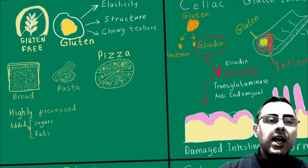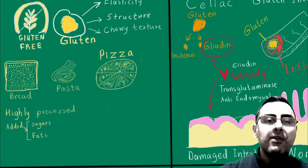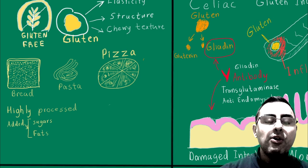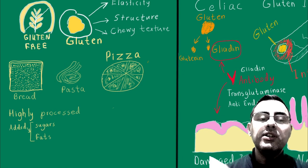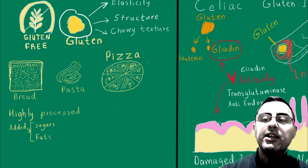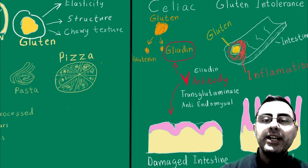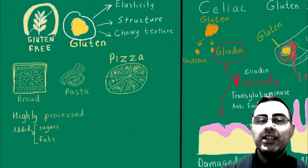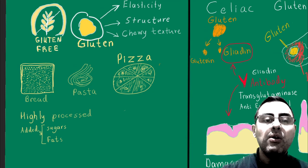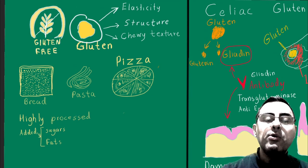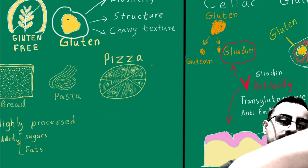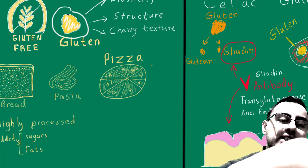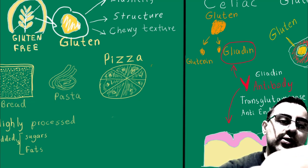Many people have abdominal discomfort and stomach ache for years and they don't even know that they have gluten intolerance or celiac disease. They don't even know about the existence of the protein which is called gluten. This yellow small protein is gluten, and wheat contains gluten.